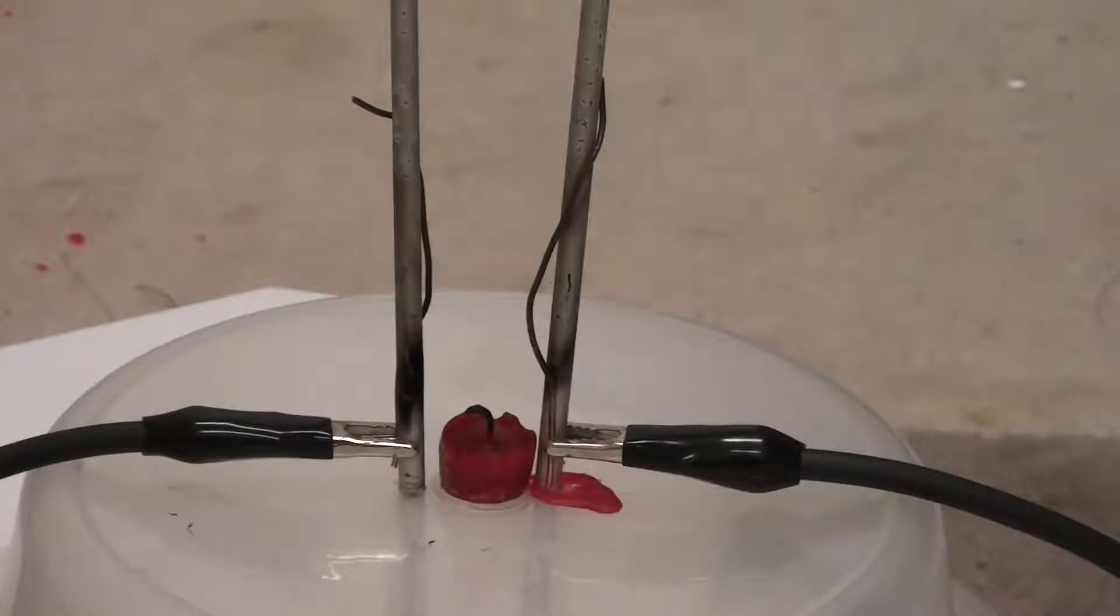Now this is the most important part of any Jacob's Ladder, and that is the bottom of the ladder where the arc first starts. In this case, since the voltage is just about 4000V and can't jump such a great distance, we have a candle.